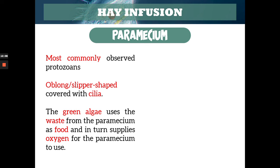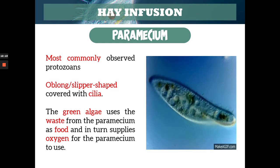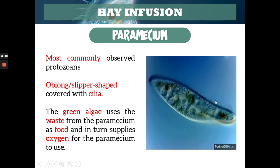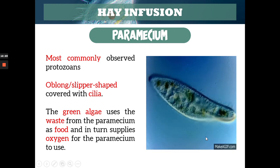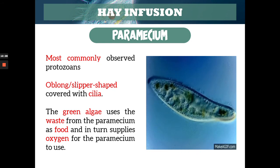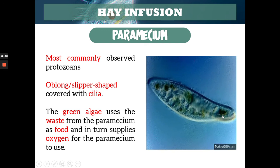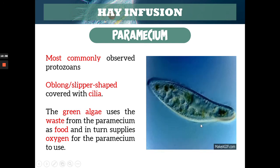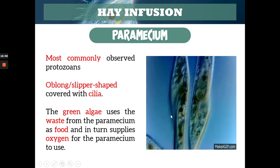This is an example of paramecium — that's why I recorded it this way so you can see the GIF. As you can see, the ones at the side that are moving — those are its cilia. The cilia are the organs of locomotion, used by paramecium for movement. As you can see, it looks like a slipper or oblong shape. That's paramecium, the most commonly observed protozoa.